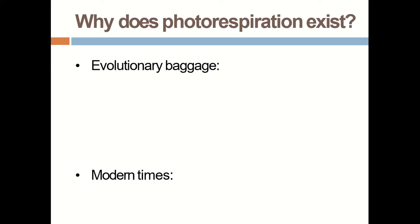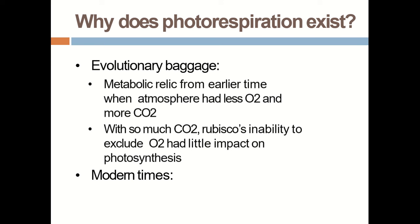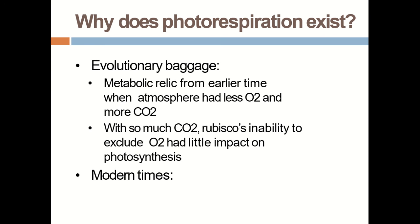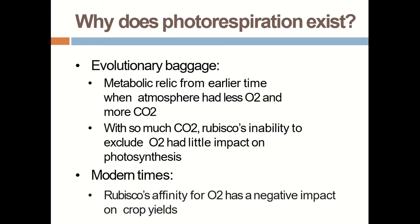The answer is seen in two ways. First, as evolutionary baggage: during evolution, atmospheric oxygen was less and CO2 was high, so it was just a metabolic relic. Also, Rubisco's inability to exclude oxygen has a little input on photosynthesis. But now in modern times, Rubisco's affinity for oxygen shows a negative impact on crop yield.